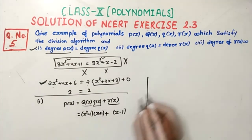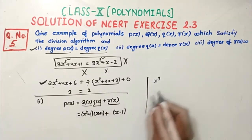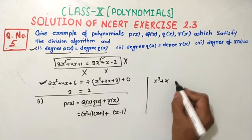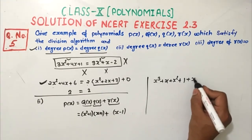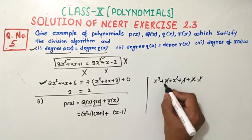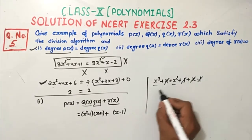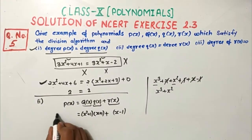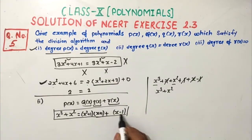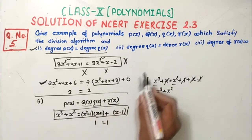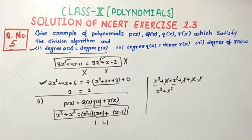Computing: (x² + 1)(x + 1) + (x minus 1) gives x³ + x² + x + 1 + x minus 1. The constants 1 and 1 cancel, and x terms combine. We get x³ + x². So p(x) = x³ + x² can be represented in this form where degree of q(x) equals degree of r(x), both being 1, and this example satisfies the division algorithm.